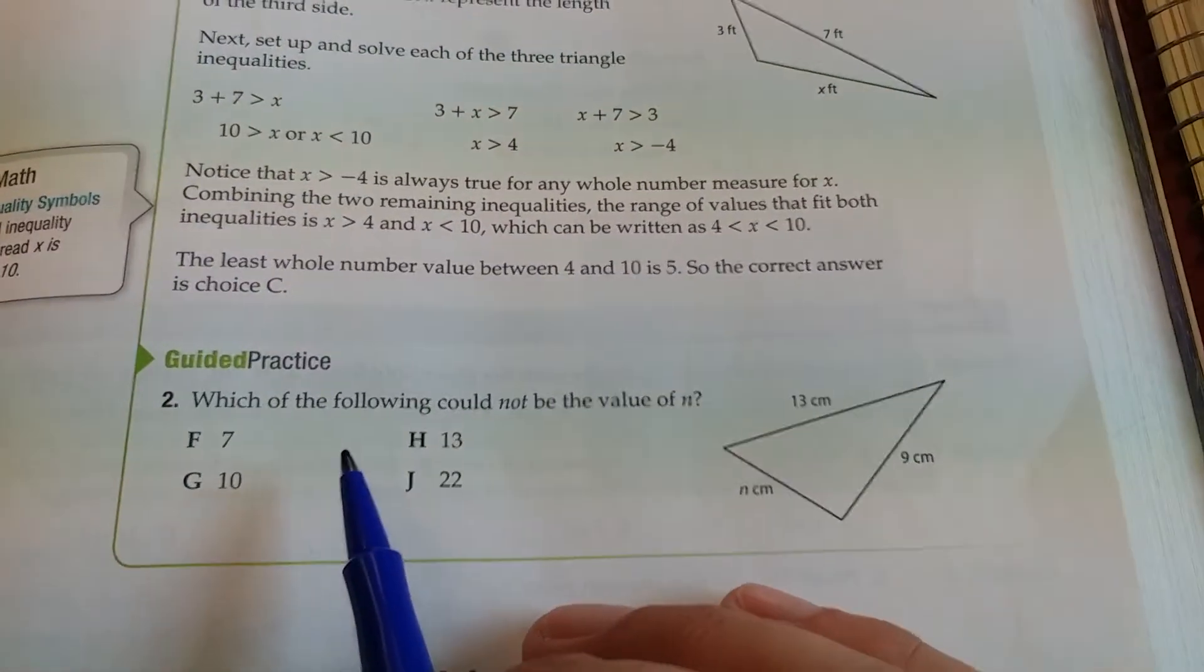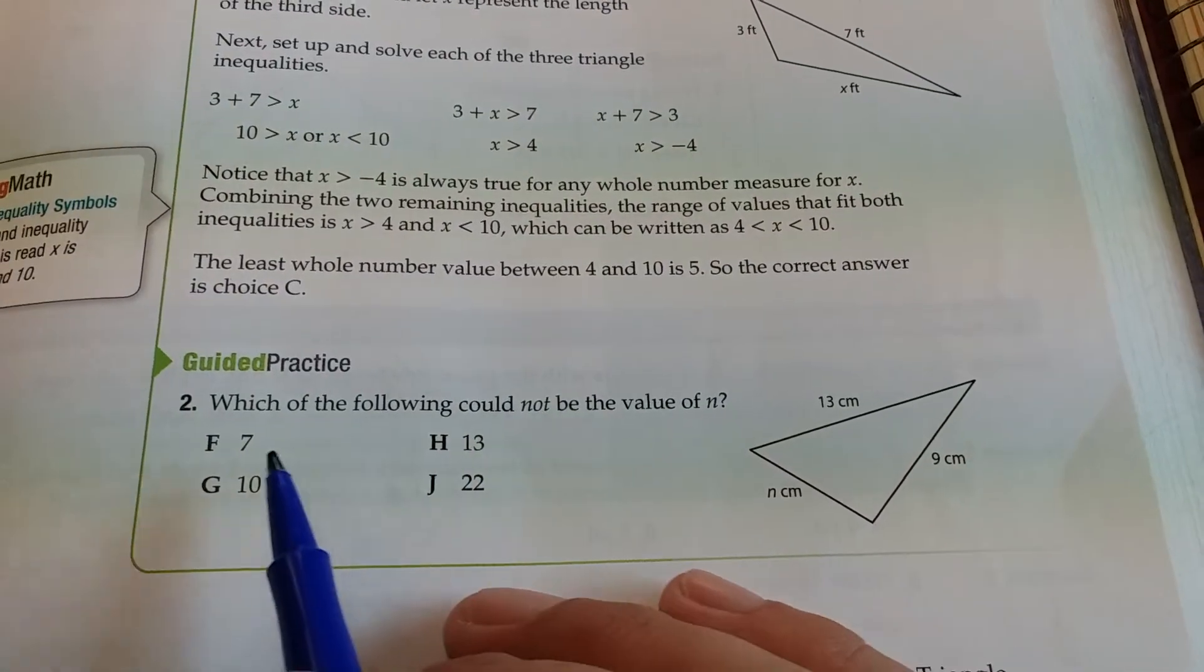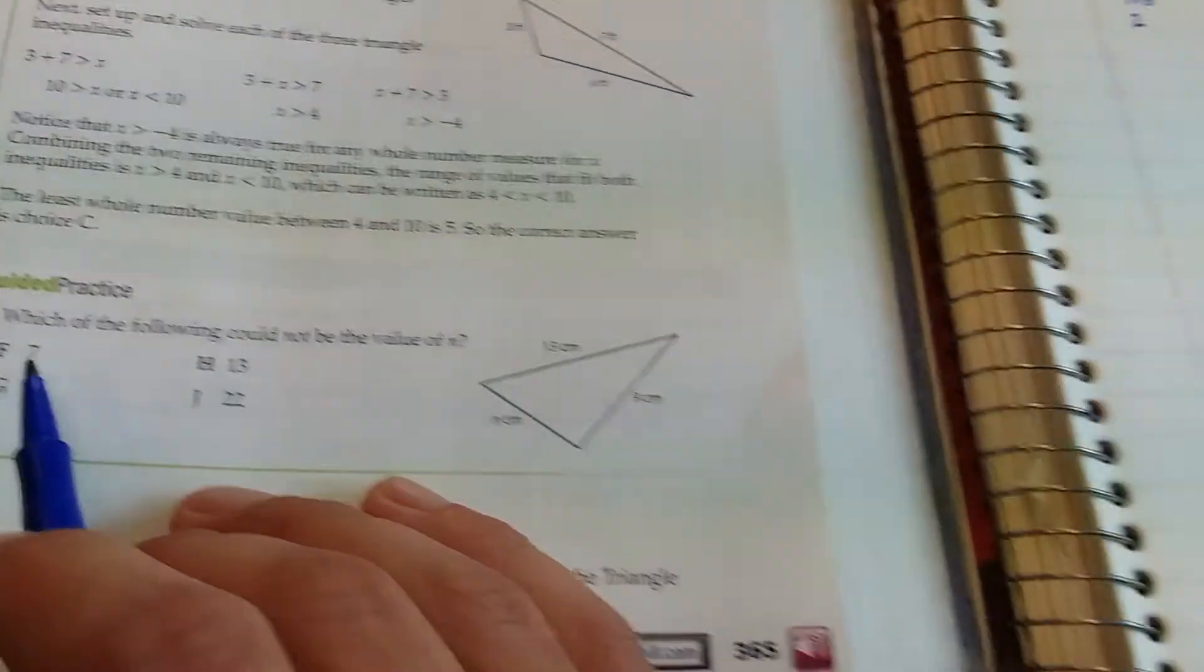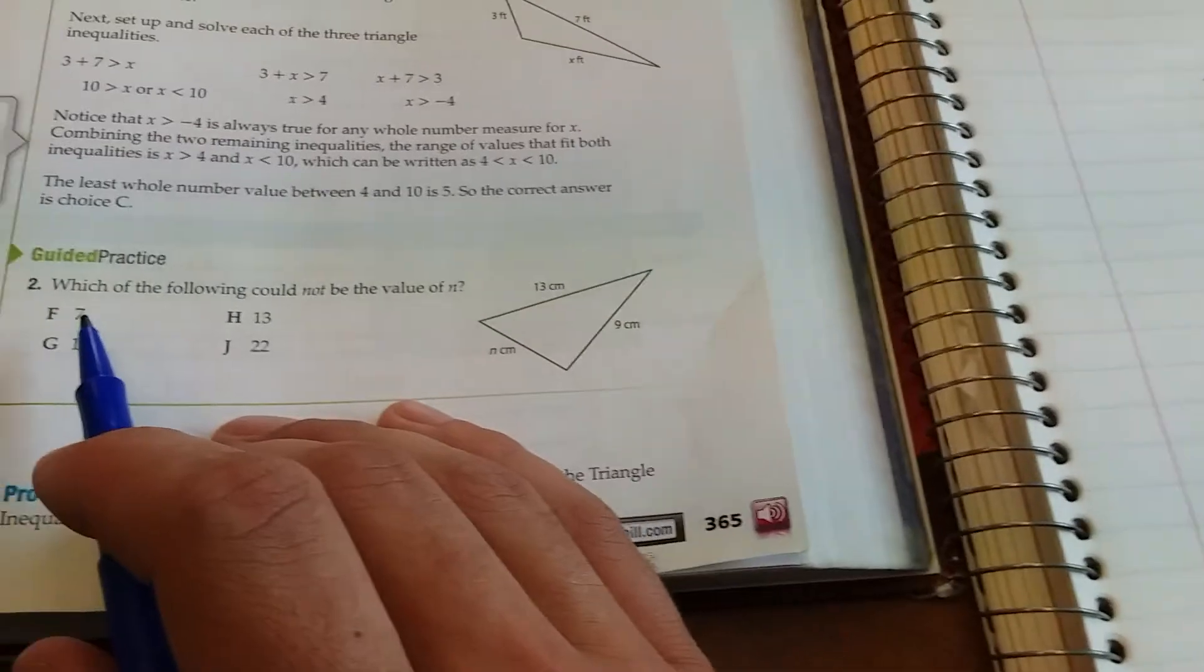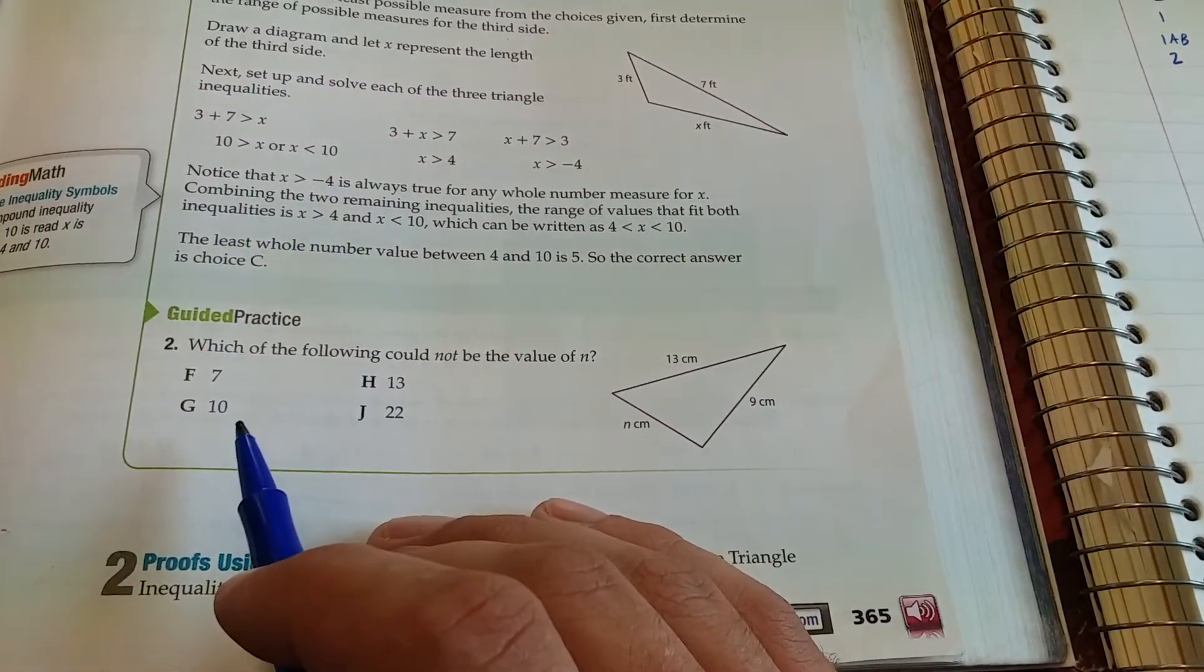So that means that if you look, it says which of the following could not be the value of n? Seven, seven is in our range between four and twenty-two. Thirteen and ten are also in our range.